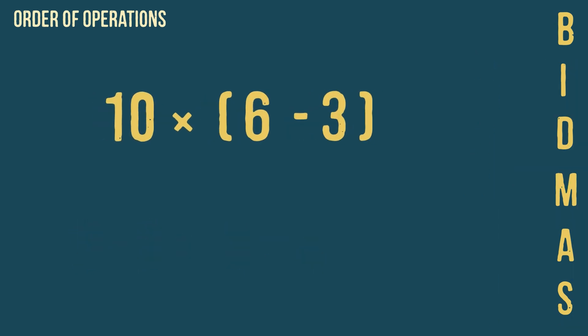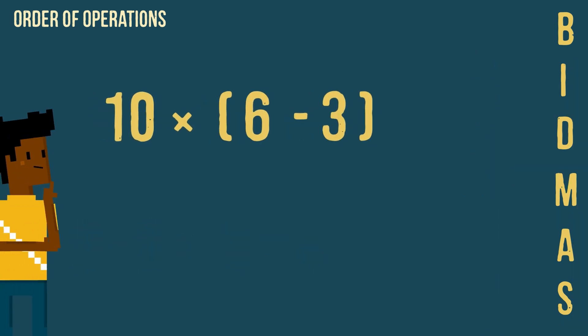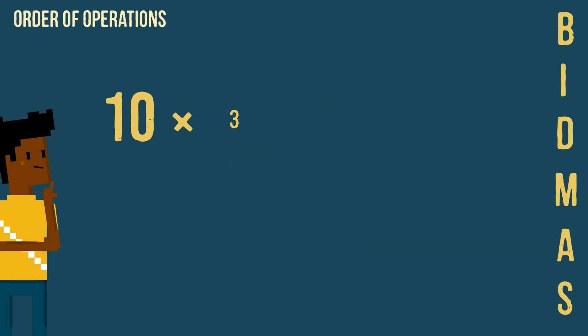In this question, anything inside the brackets needs to be carried out first. This is then followed by the multiplication, as there are no indices.